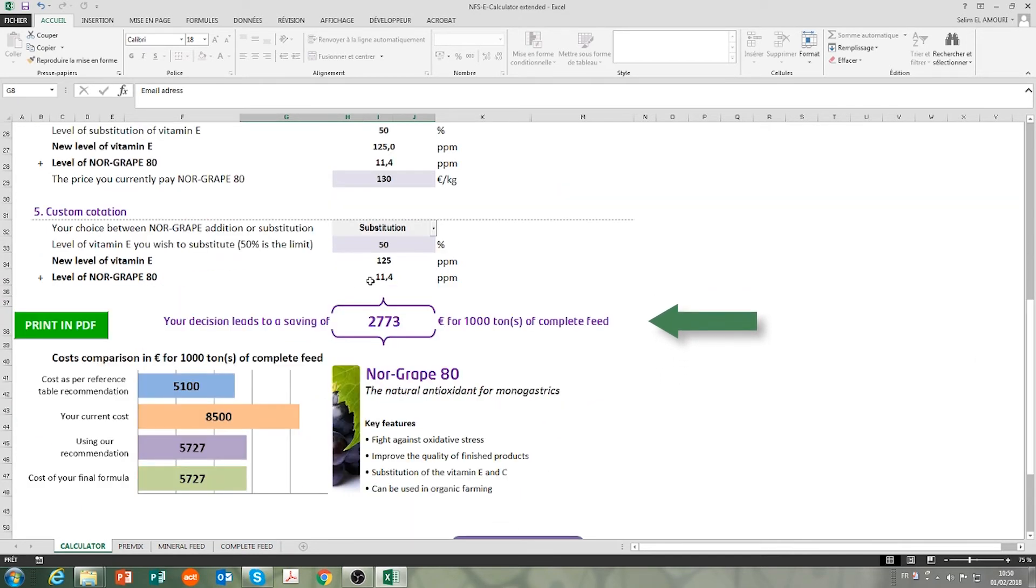We generate a saving of 2,700 euros for 1,000 tons of feed or 2.70 euros per ton of feed. There is a real interest in using Norgrape 80 in the diet to generate significant savings.